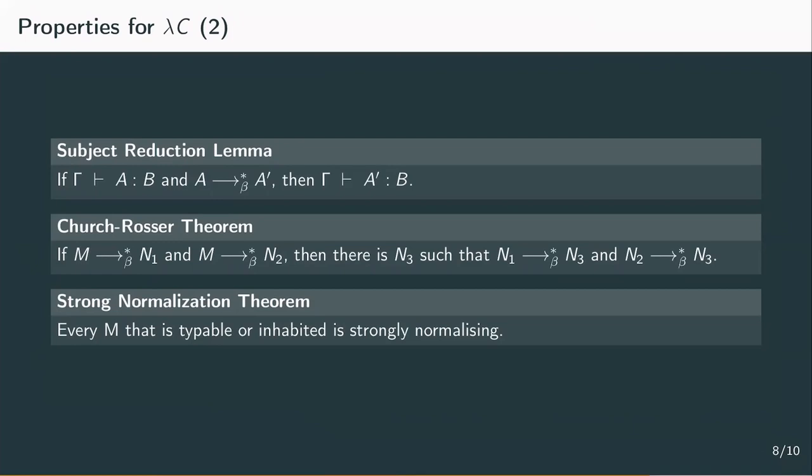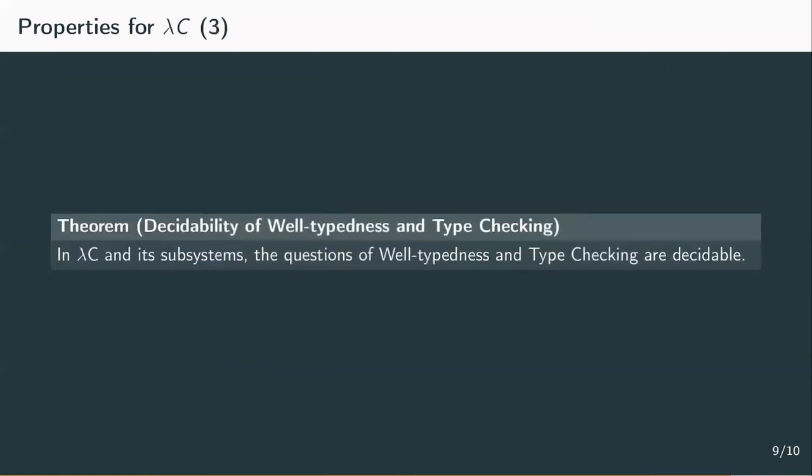A few important properties we want to mention are the decidability of type checking, well-typedness, and inhabitation. Why this is so important will be covered in the next video, where we're going to look at the logical approach of these systems. Well-typedness and type checking are decidable in all systems of the lambda cube. Inhabitation, however, so the task of finding a term to a given type, is only decidable in the simply-typed lambda calculus and in lambda weak omega. It's undecidable in all systems containing lambda 2, lambda P, and especially in the calculus of construction.